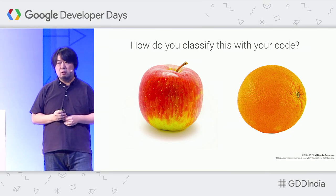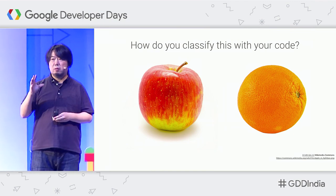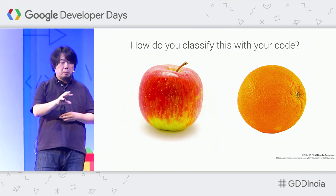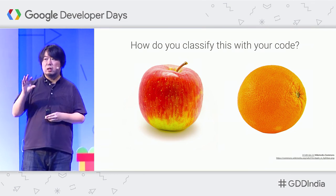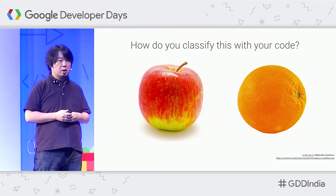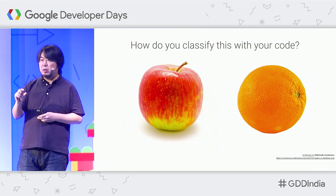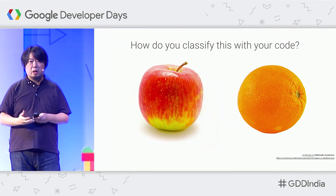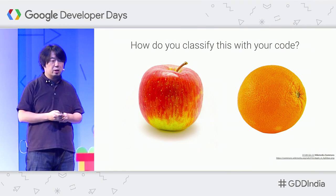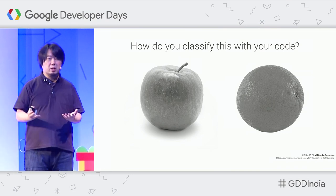Let's take a look at how neural networks can solve a problem using a fruit classification example. Imagine you are a programmer and your customer asks you to classify images as an apple or an orange. The easiest approach might be to look at the color of pixels — if it's red, it must be an apple. But then your customer comes back and says the camera in production is not great, so the image would be monochrome.